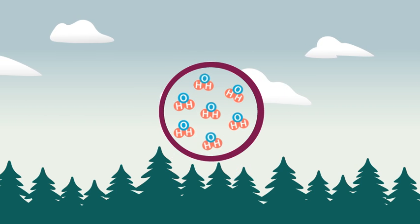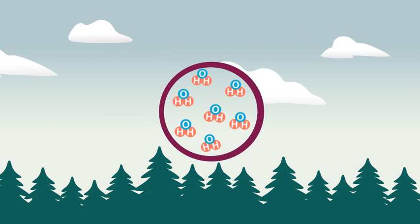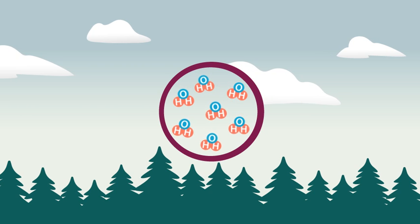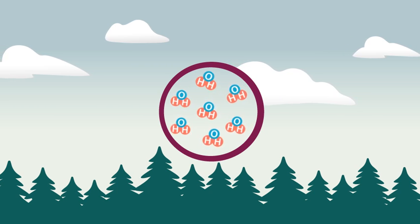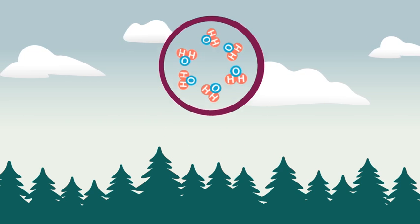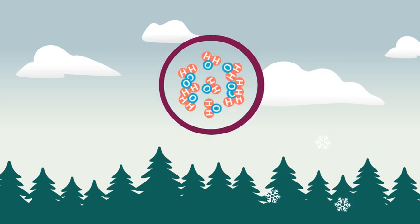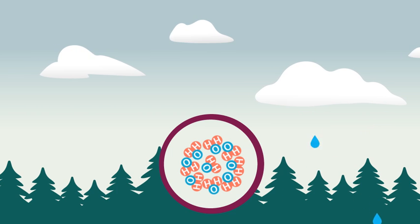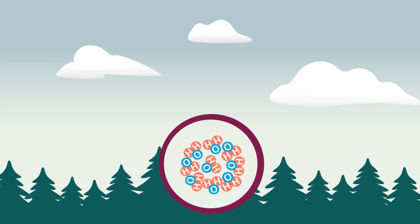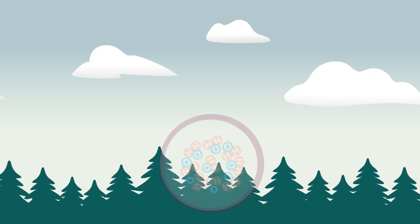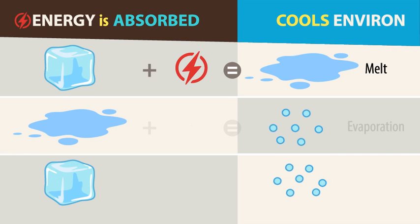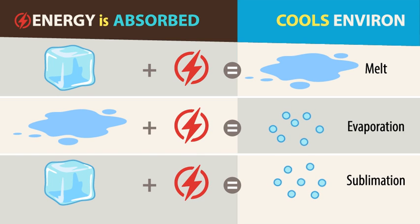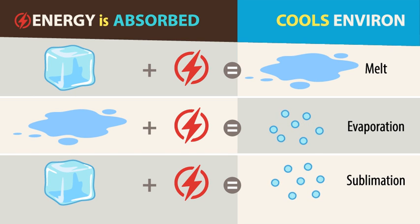Water is special, though, because it can exist in all three of its phases within the atmosphere: vapor, a gas, when it's just floating around; a solid when it's snow or hail; and liquid when it's raining. This is important because the process of moving from one phase to another affects the temperature of the air. When water melts, evaporates, or sublimates, it takes energy from — or cools — the environment, and stores it as latent heat.